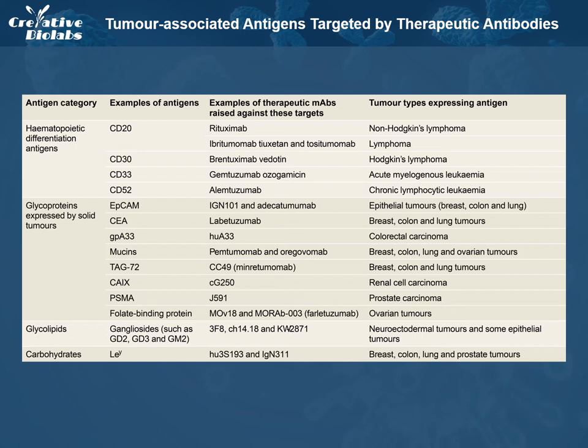If the desired mechanism of action is antibody-dependent cellular cytotoxicity or complement-dependent cytotoxicity, then it is desirable that the antigen-antibody complex should not be rapidly internalized, so as to maximize the availability of the FC region to immune effector cells and complement proteins, respectively. By contrast, good internalization is desirable for antibodies or proteins that deliver toxins into the cancer cell, and for antibodies whose action is primarily based on the down-regulation of cell surface receptors.